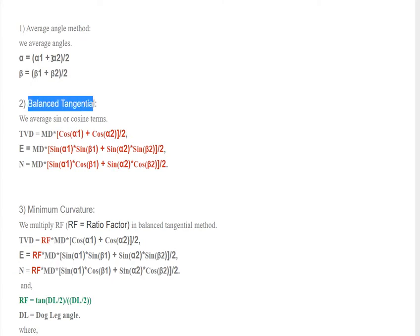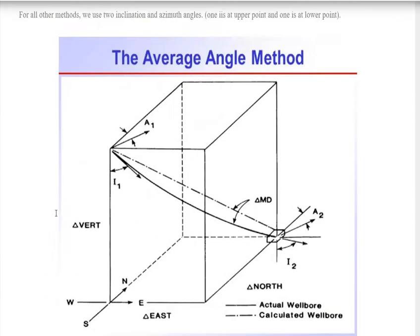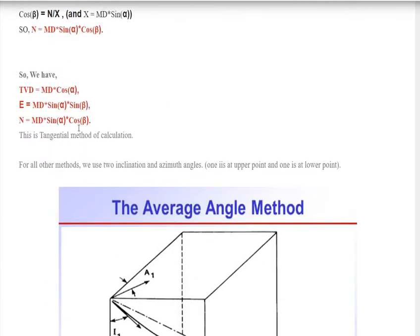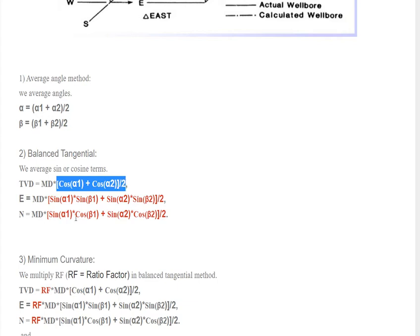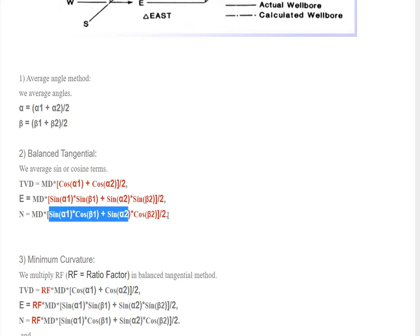The next method is the balanced tangential method. Here, instead of averaging the angles, we average the sine or cosine terms. Using the same equations, for TVD we take (cos α1 + cos α2) / 2. Similarly for east-west and north-south, we take each trigonometric term, sum them, and divide by 2. This is the balanced tangential method.